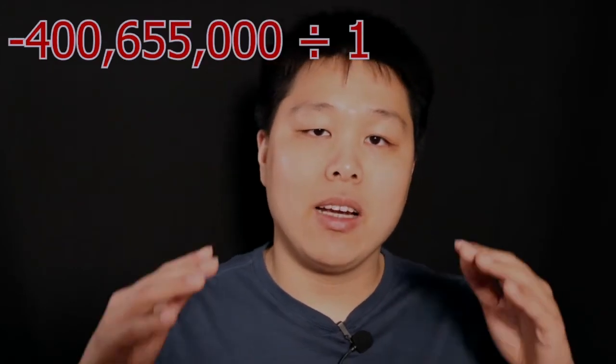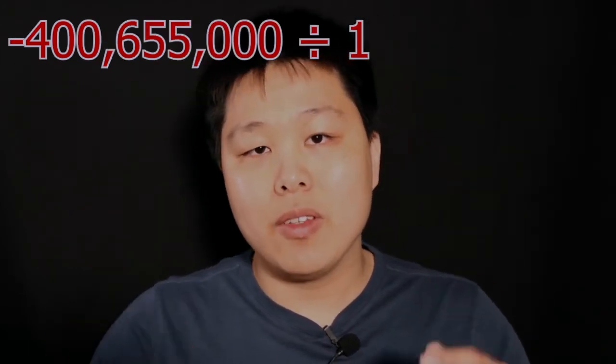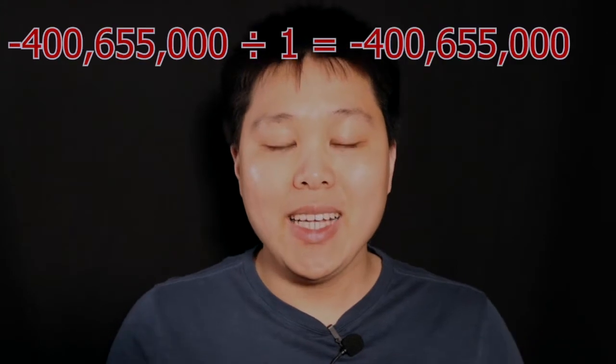Let's start off with the number 1. Any number can be divided by 1 without a remainder — plain and simple. Can negative 2 be divided by 1? Yes. Can 1,000 be divided by 1? Yes. Can negative 400 million 655 thousand be divided by 1? Yes. Any number can be divided by 1 without a remainder. If you have that one annoying friend who asks you this question, no matter what, you can answer with a definite yes before they even finish the question.